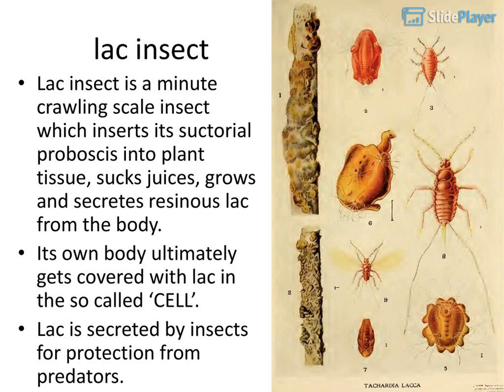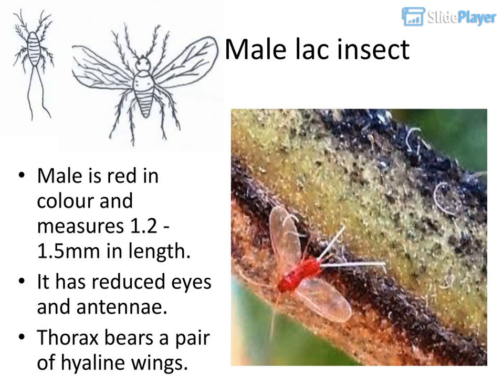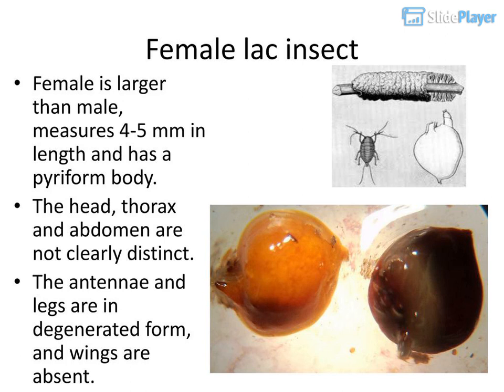The LAK insect is a minute crawling scale insect which inserts its sectorial proboscis into plant tissue, sucks juices, grows, and secretes resinous LAK from the body. Its own body ultimately gets covered with LAK in the so-called cell. LAK is secreted by insects for protection from predators. The male LAK insect is red in color and measures 1.2 to 1.5 millimeters in length.